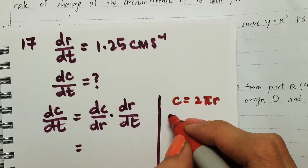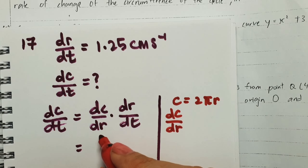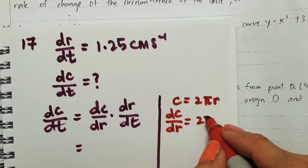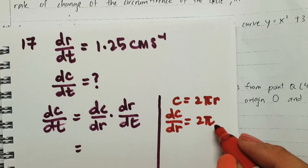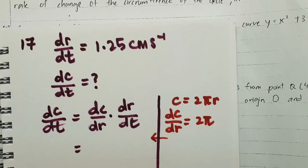Therefore, to differentiate C with respect to r, because this is what we want, dc/dr, it becomes 2π. Therefore, put this one in here. The dc/dr we've just found to be 2π.